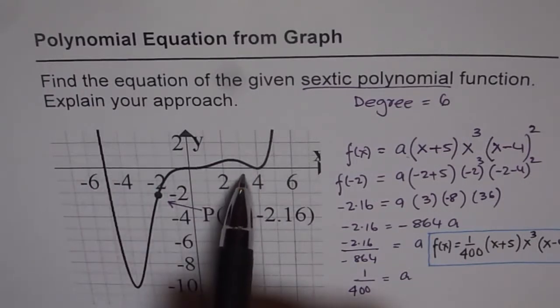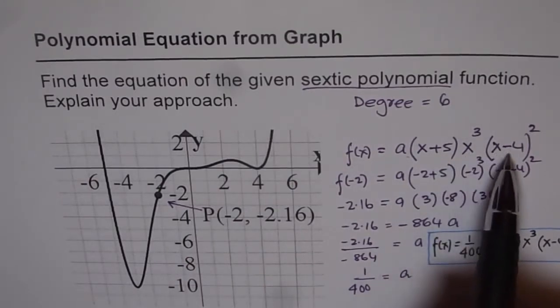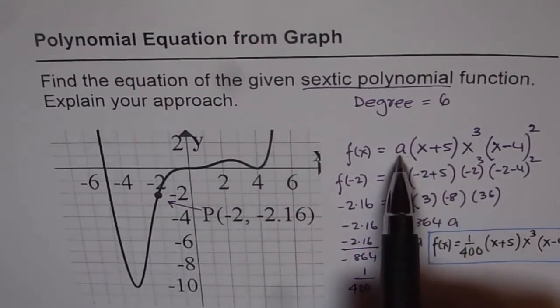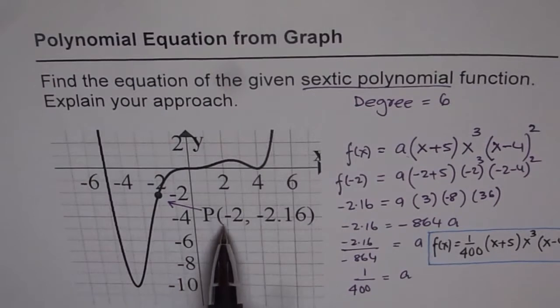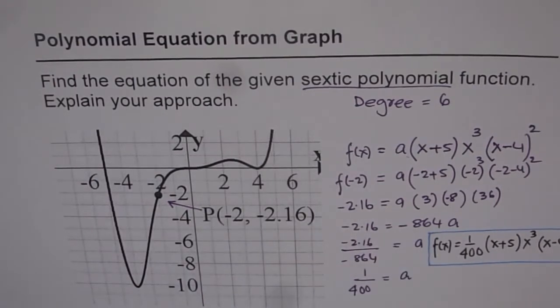This is a cubic zero and that one is a quadratic zero if I may say so. So their order is 1, 3 and 2 respectively and they are at minus 5, 0 and plus 4. So these gives me 3 factors and then the leading coefficient a which we need to figure out from the given point. So once you substitute the point you can solve for a and get your equation.